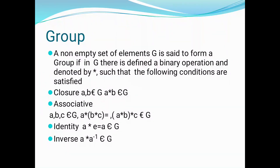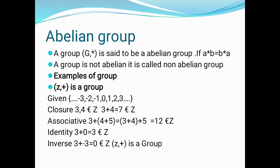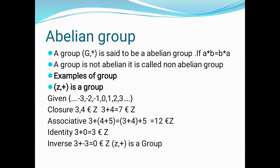What are the conditions to be satisfied? Closure, associative, identity, and inverse. Next, we see the definition of an abelian group. A group (G, star) is said to be an abelian group if A star B equals B star A — that means the commutative property is also satisfied. If a group is not abelian, it is called a non-abelian group.